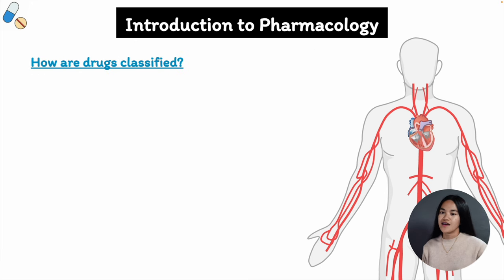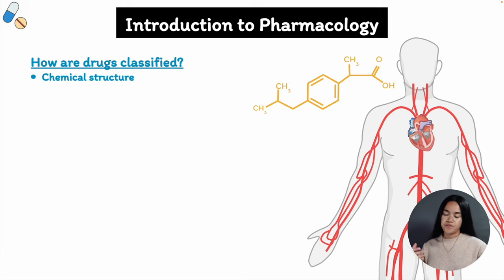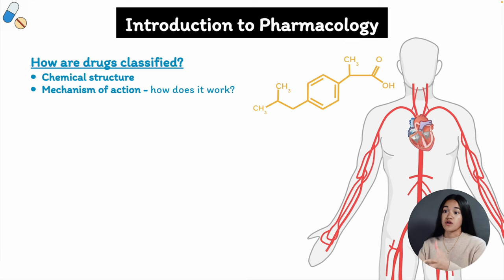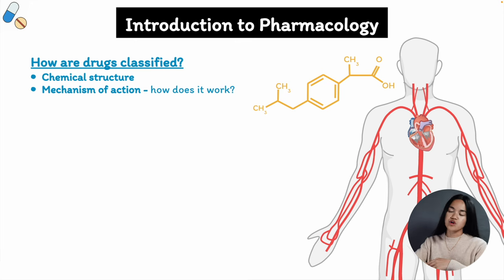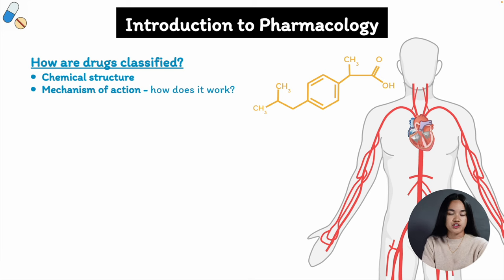So that's the definition of a drug. The question now is how are drugs classified? Drugs can be classified in different ways: based on their chemical structure, or based on their mechanism of action — which is how the drug achieves its biological effects, for example how it lowers blood pressure.